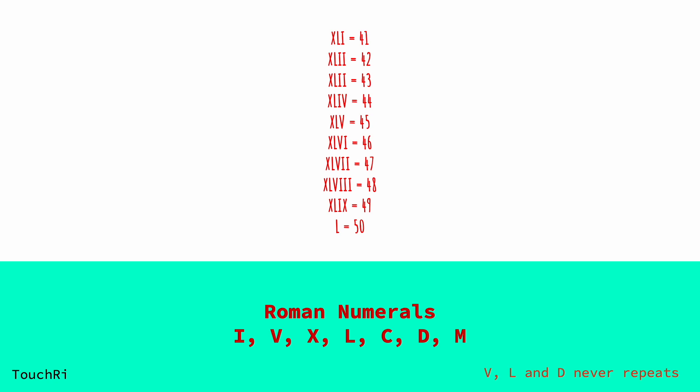Of course, like any language, there are exceptions and variations in Roman numerals. One common exception is CM. Instead of writing CCC for 400, CM is used. It represents 900, which is 1000 (M) minus 100 (C).